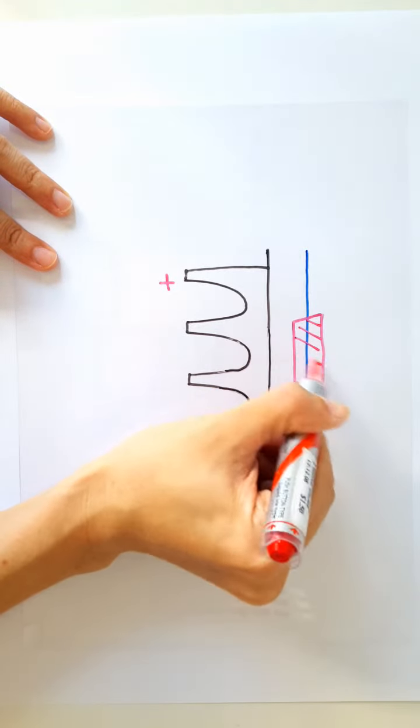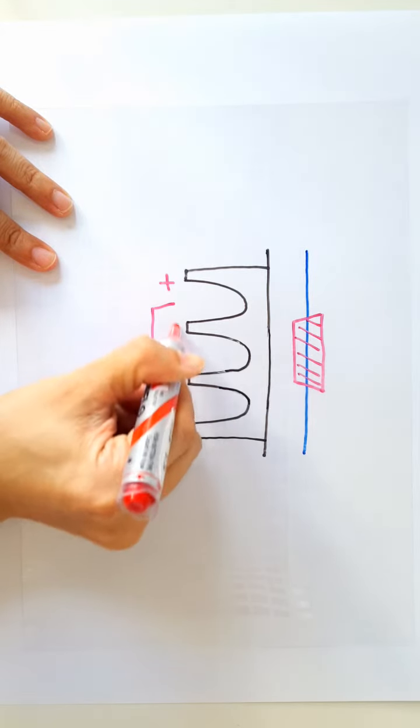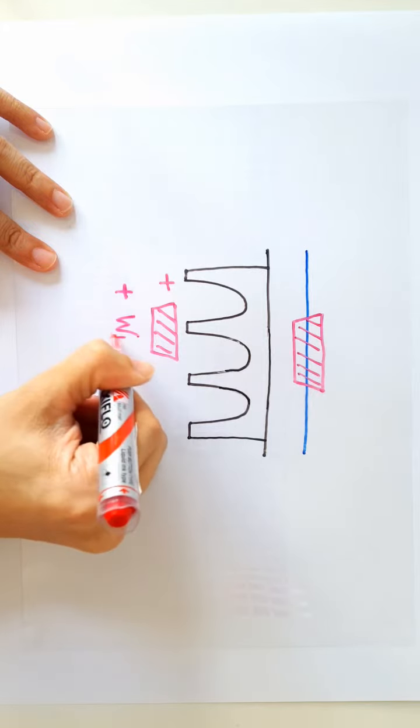So this is the additional weight of the boat that the bridge must support. Let me write it as weight of the boat.